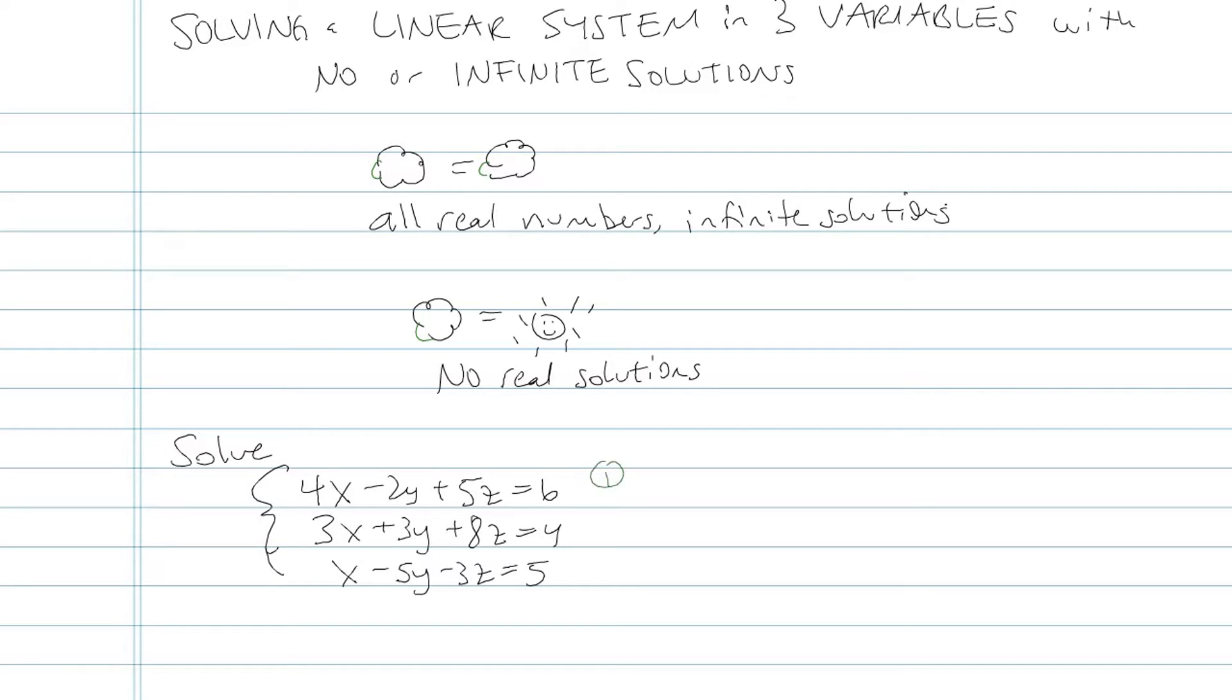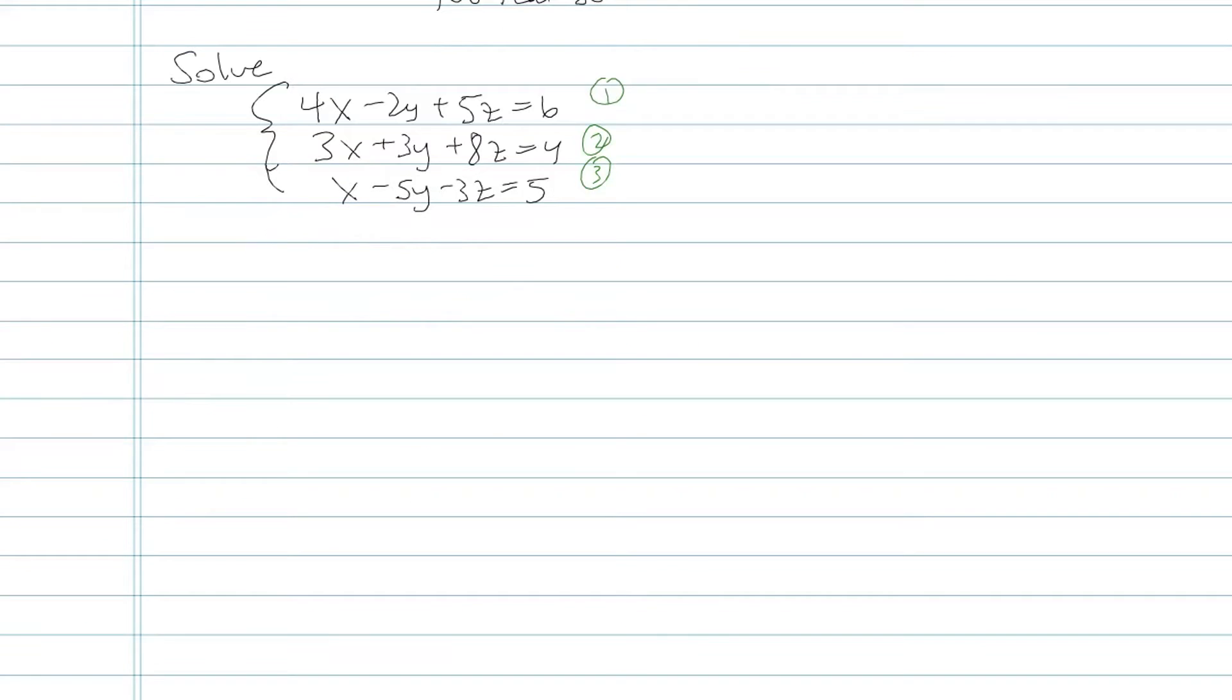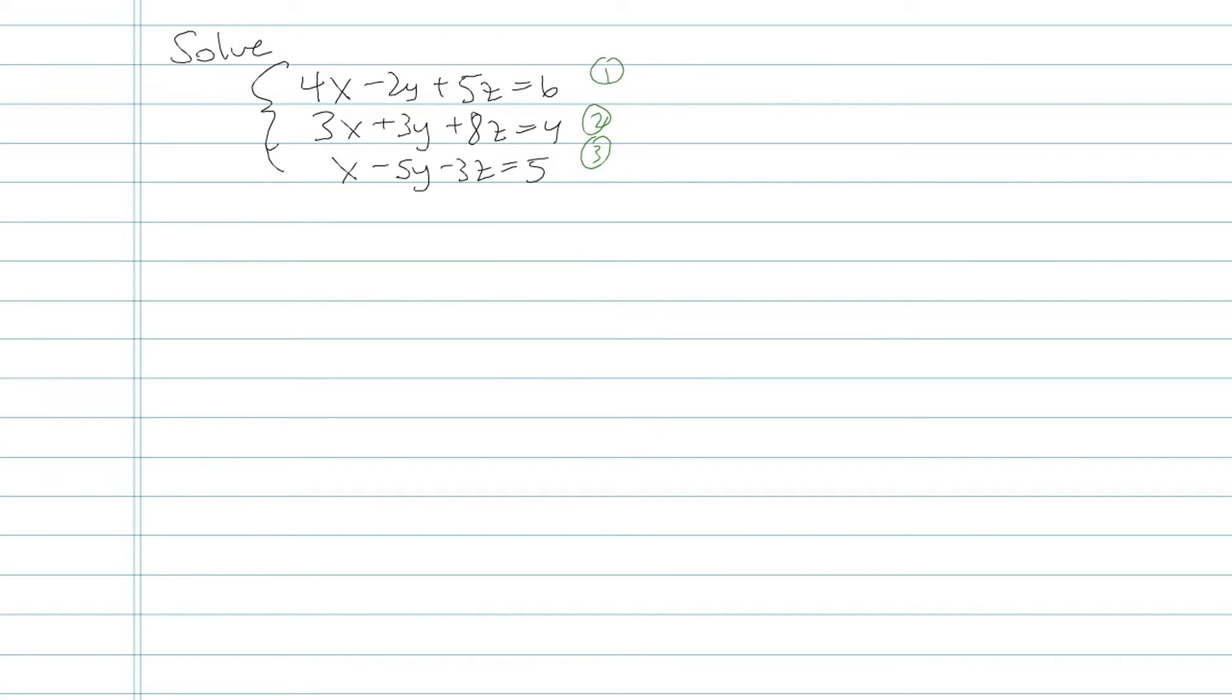Well, let's try it. What I'm going to do with this 3 by 3 system is number them 1, 2, and 3, because that's going to help me organize my work. And then I'm going to pick a variable to eliminate, and there's no variable that's easier than another. I'm going to pick to eliminate the y's, because there's some plus and minus signs, but really, there's lots of different ways to attack this guy. Picking to eliminate the y's is no better than anything else.